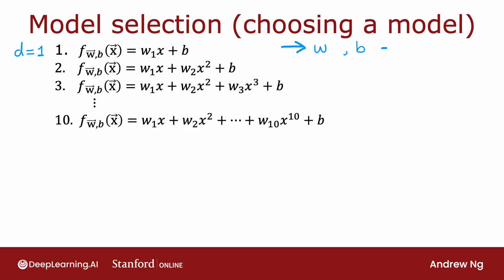You can then compute J test to estimate how well this will generalize to new data. I'm going to use w1, b1 (superscript 1) to denote the parameters you get if you were to fit a first-order polynomial, or degree 1, d equals 1 polynomial.